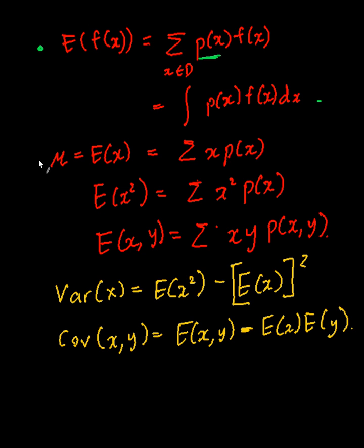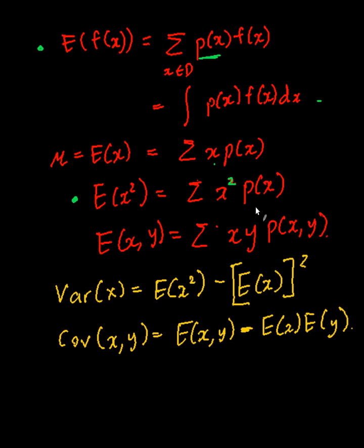An example is the mean — the mean is defined as the expectation of x, which is x times the probability of x, summed up. The expectation of x-squared is x-squared times the probability of x. Notice I have not squared the probability of x — that's a common mistake. You don't touch the probability; it stays exactly as it is.